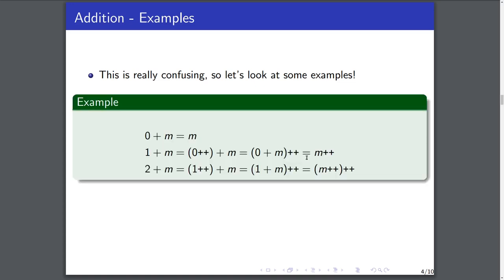To take out some of the confusion, it helps to do some examples. From the definition, 0 + m = m, which shouldn't be troubling. For 1 + m, if we notice that 1 is the successor of 0, we can write 1 + m as (0++) + m. From the definition of addition, we move the ++ to the outside and get (0 + m)++. Since 0 + m = m, this whole thing is just the successor of m, which is intuitive because 1 + m means walking forward from m by 1.